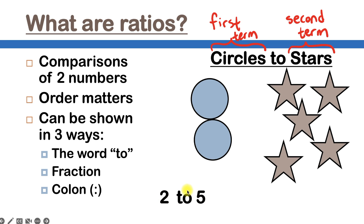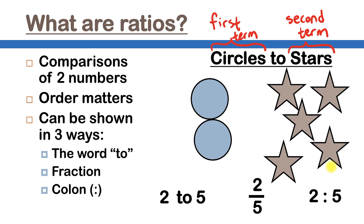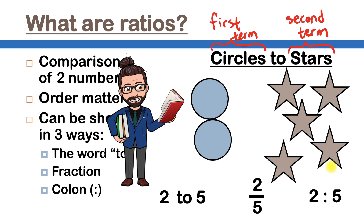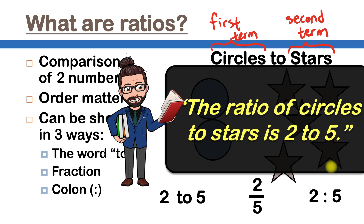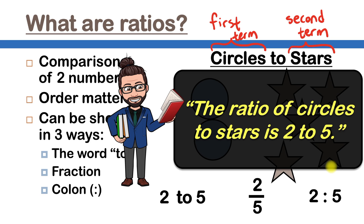Remember, there are two other ways to write this. We've already used the word 'to.' Now we can use fraction form, and that would be two over five. And finally, we'll use the colon — just those two dots — so we would write two colon five. Here's the really important thing to remember: even though you write ratios in three different ways, you only read it in one way. And that way is: the ratio of circles to stars is two to five.